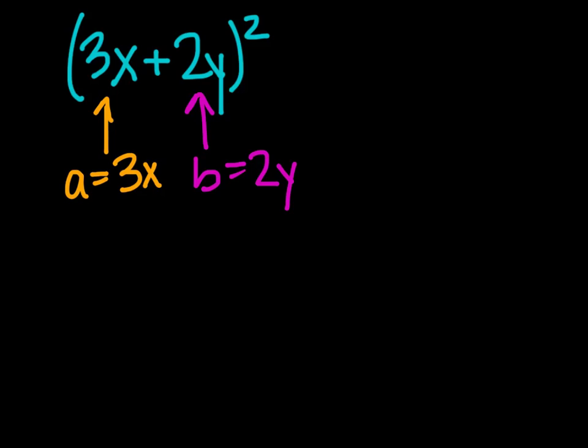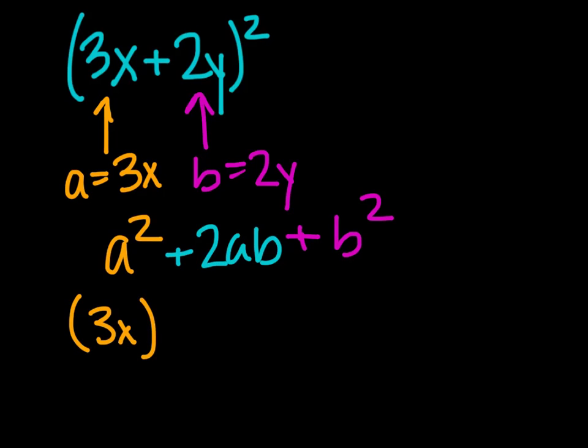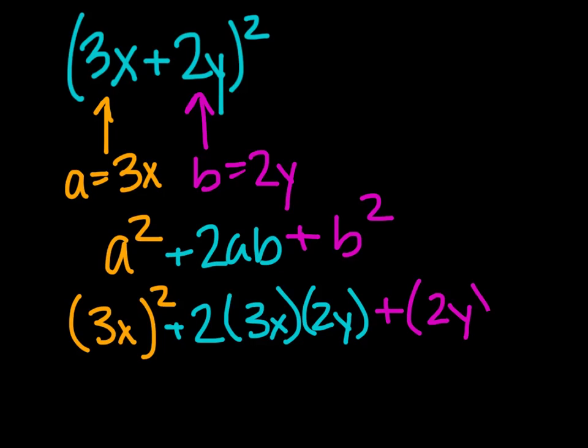We had that initial situation where we have a squared plus 2ab plus b squared is how we can solve this. So if I were to do all of that work, we end up having a squared, which is 3x, that quantity squared, plus 2 times 3x times 2y. And then the last bit is we have b squared, which is 2y squared.